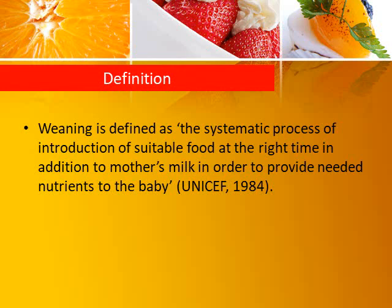As per UNICEF in 1984, weaning is defined as the systematic process of introduction of suitable food at the right time, in addition to mother's milk, in order to provide needed nutrients to the body. UNICEF states that weaning is a process in which we introduce suitable foods to the child at the right time so that, in addition to mother's milk, the child gets proper nutrients for growth and development.